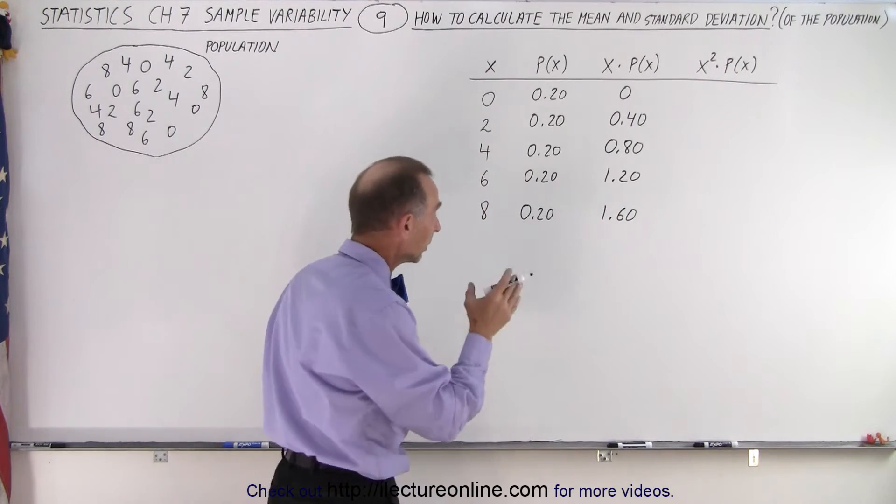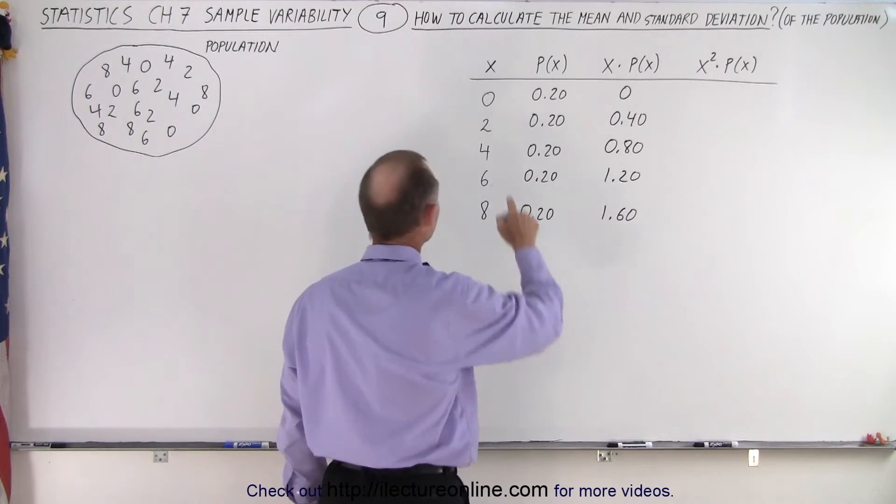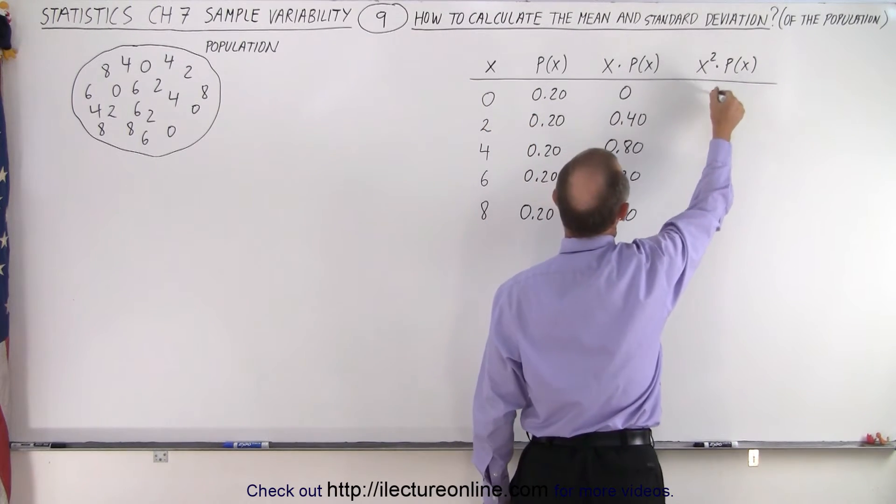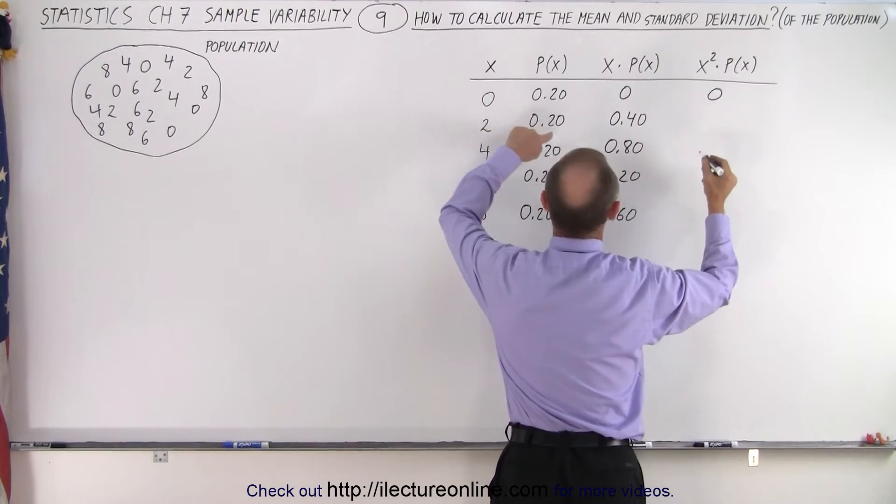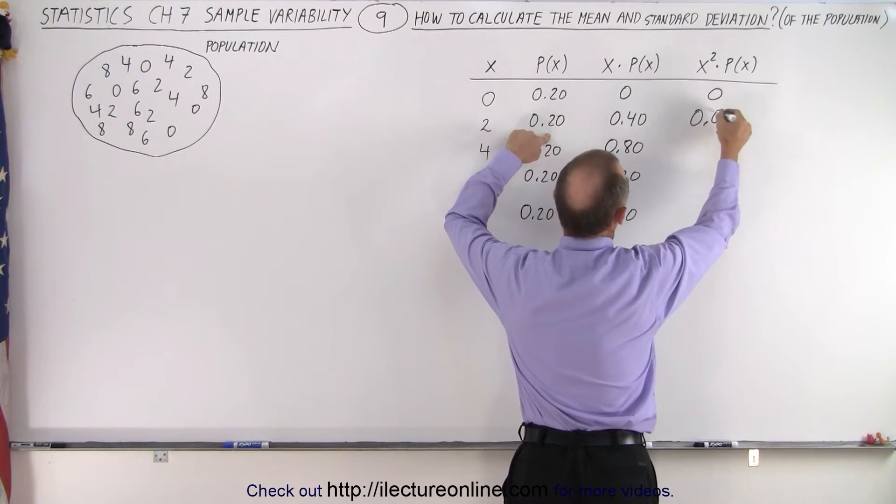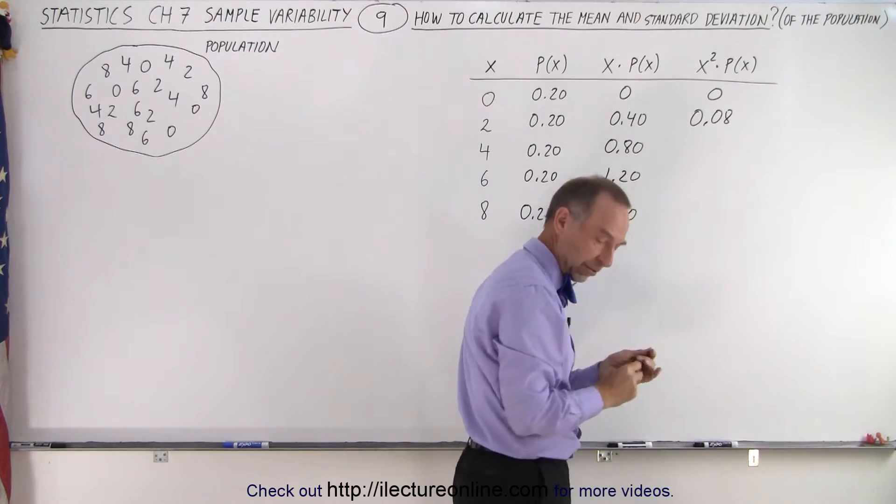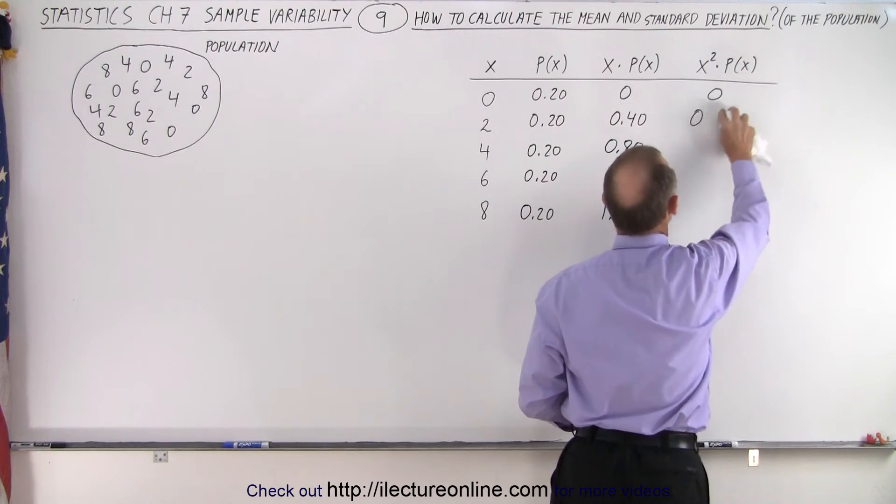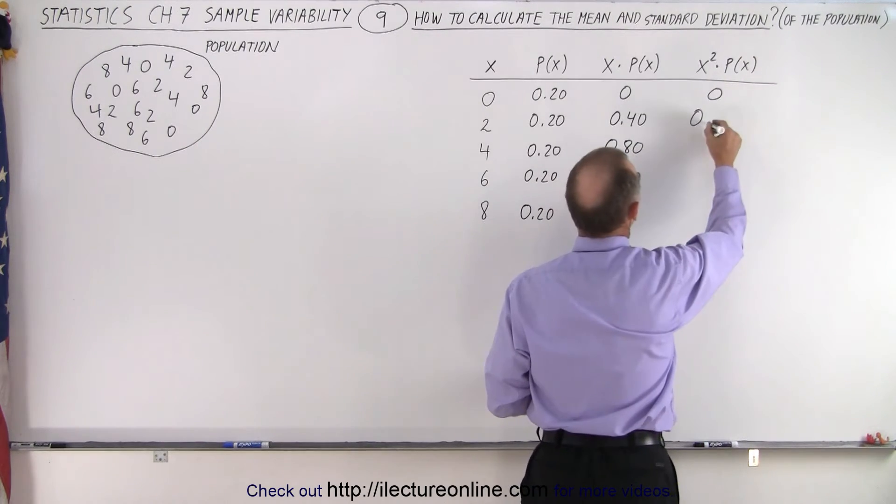And now for the last part, the last column, we're going to multiply x squared times the probability. So this gives us 0 again. 2 squared is 4 times this is 0.08. Oh, no, no, that's not true. It's 0.80. Double that.